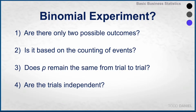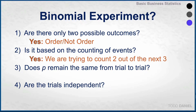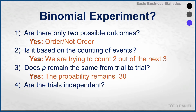Let's make sure that this is, in fact, a binomial experiment. First, are there only two possible outcomes? Yes, the customer will either order or not order an appetizer. Is the outcome based upon the counting of events? Yes, we're trying to count two out of the next three events. Does the probability remain the same from trial to trial? Yes, the probability is always going to be 0.30. That was derived from looking at sales figures.